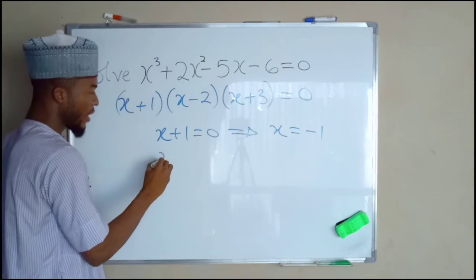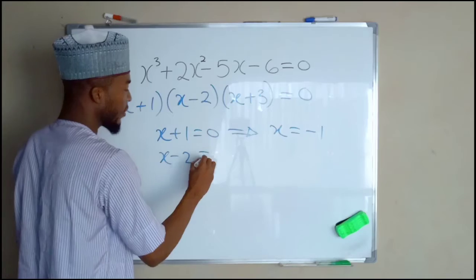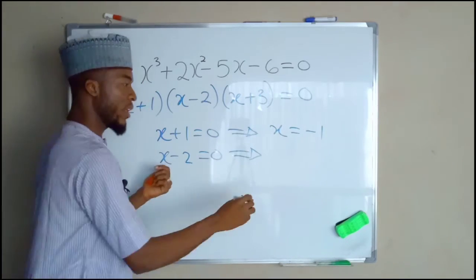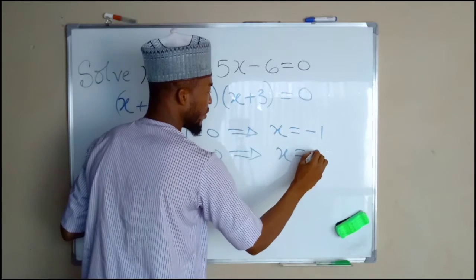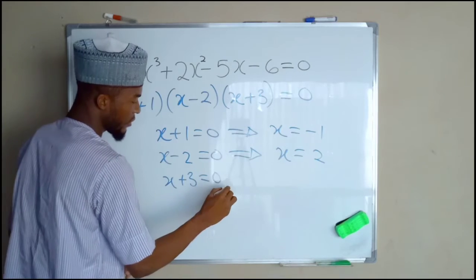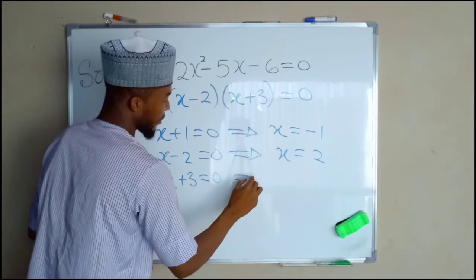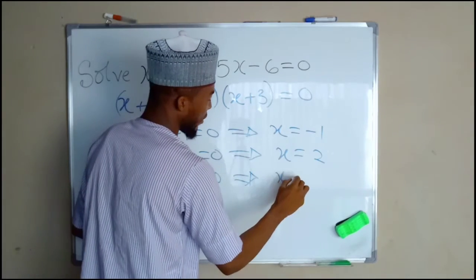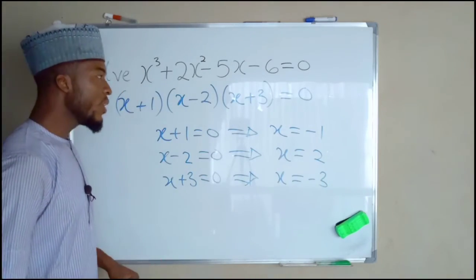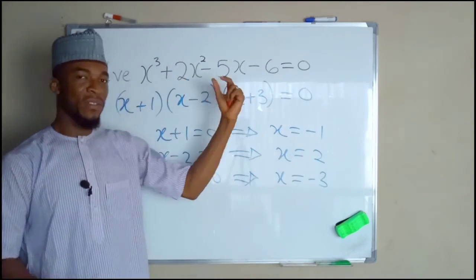So now, second factor, x minus 2 equals to 0, this implies that x is equal to positive 2. And the last factor, x plus 3 equals to 0, this implies that x is equal to negative 3. So these are the real solutions of this cubic equation.